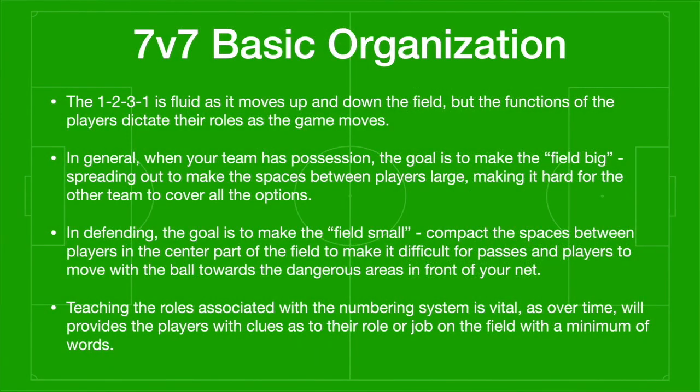In review, the 1-2-3-1 is fluid as it moves up and down the field, but the functions of the players dictate their roles as the game moves on. In general, when your team has possession, the goal is to make the field big — spreading out to make the spaces between players large, making it hard for the other team to cover all the options. There are plenty of triangles and diamonds in the 1-2-3-1 formation for players to have options in almost all directions to pass the ball. In defending, the goal is to make the field small, compacting the spaces between players in the center part of the field to make it difficult for passers and players to move with the ball towards the most dangerous areas in front of your net.